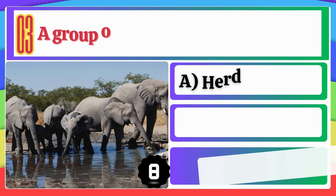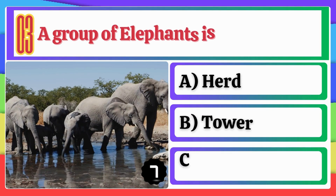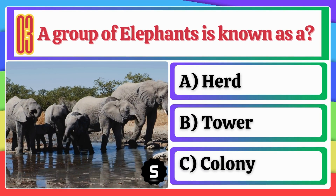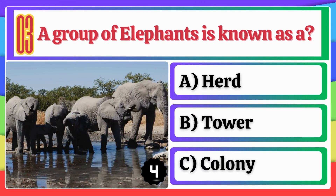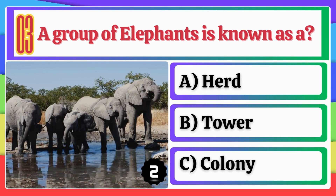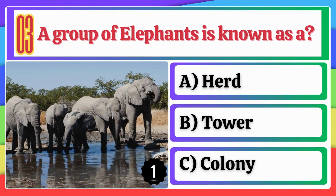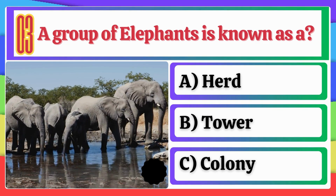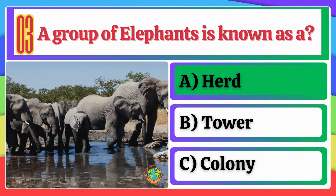A group of Elephants is known as a: Herd, Tower, or Colony? Option A, Herd, is correct.